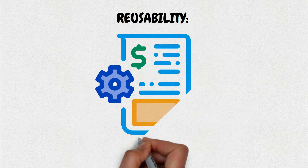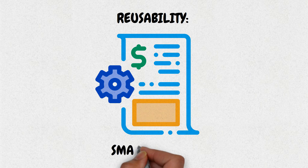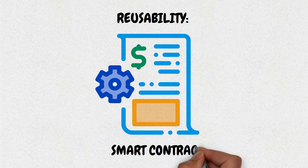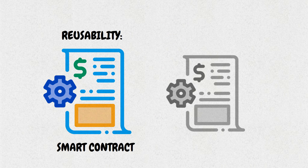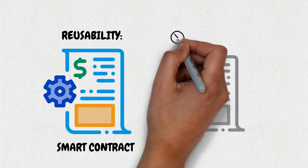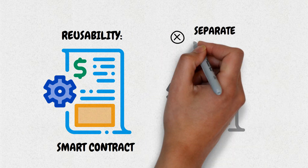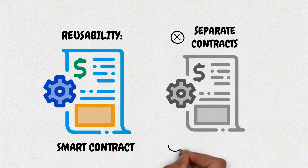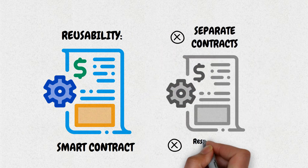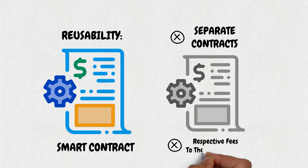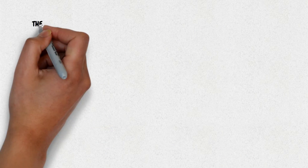Reusability: the same smart contract used to swap your tokens can be used to swap anyone else's tokens. In the traditional world, separate contracts would need to be made, and respective fees to the intermediary would have to be paid.